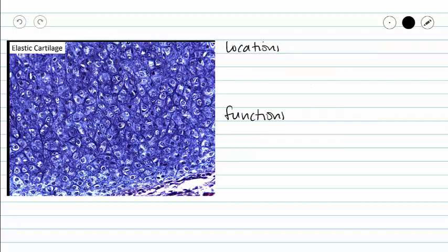For locations, we have fewer locations for our elastic cartilage than we had for hyaline cartilage. We see our elastic cartilage making up the structure of our external ear. Our external ear goes by a couple of different names: you can call it the external ear, the pinna, or the auricle — spelled A-U-R-I-C-L-E.